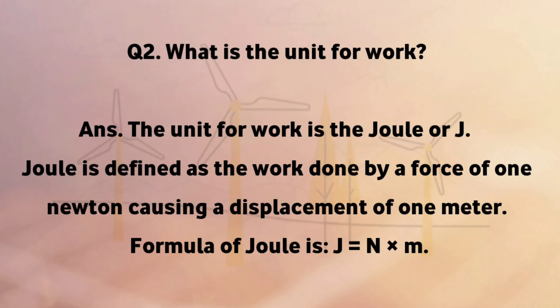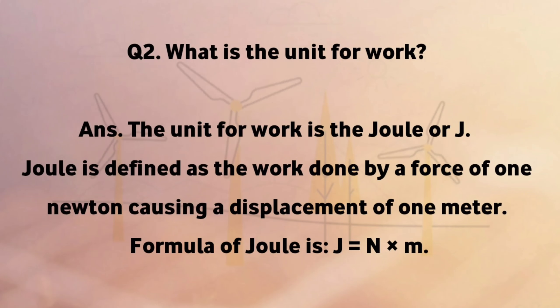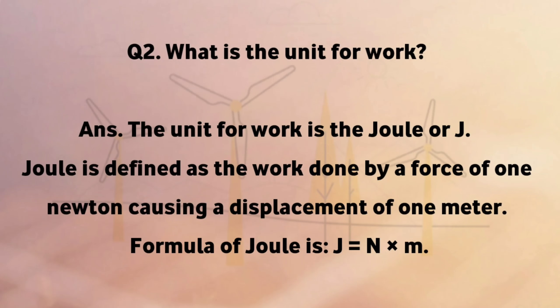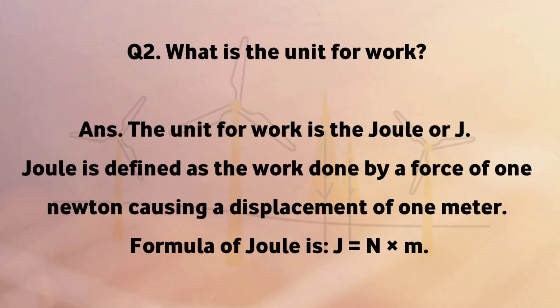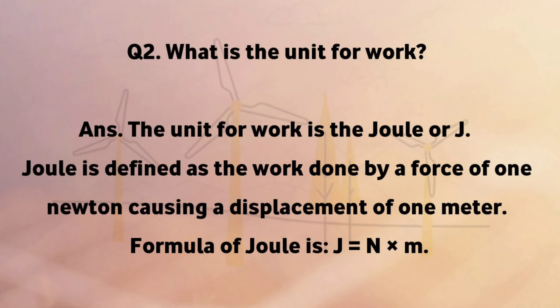What is the unit for work? The unit for work is the joule, defined as the work done by a force of one newton causing a displacement of one meter. The formula for joule is J equals N into M.